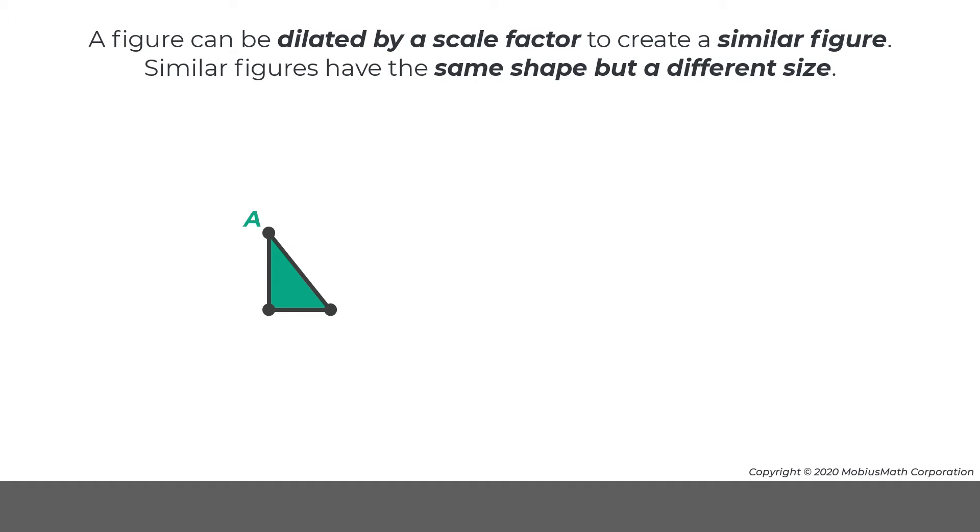For example, triangle ABC can be dilated by a factor of 3 using a point of dilation. The distance between the point of dilation and a vertex of the triangle represents a scale factor of 1.